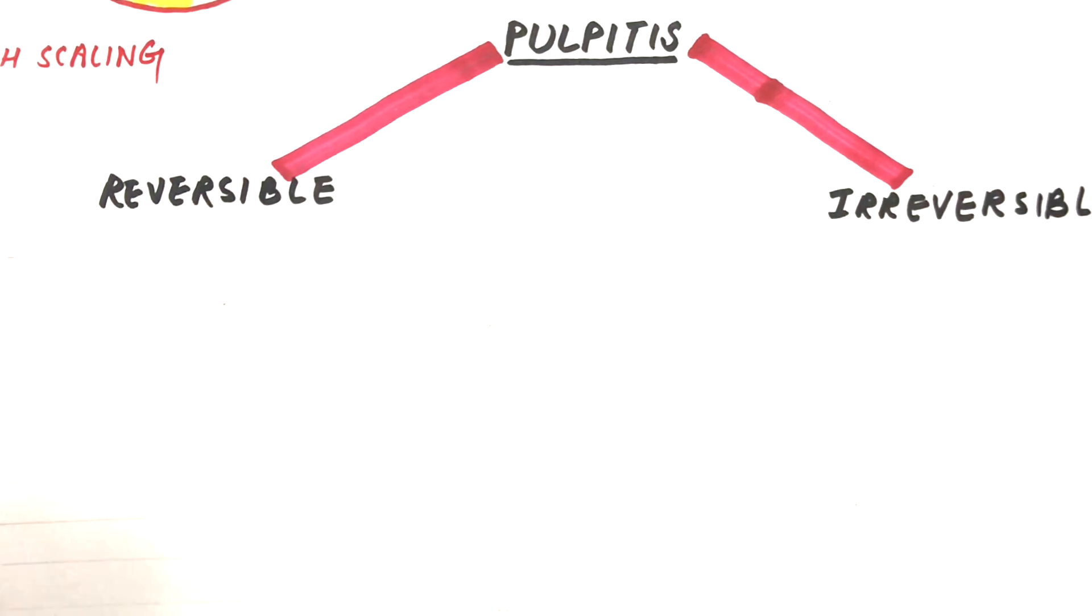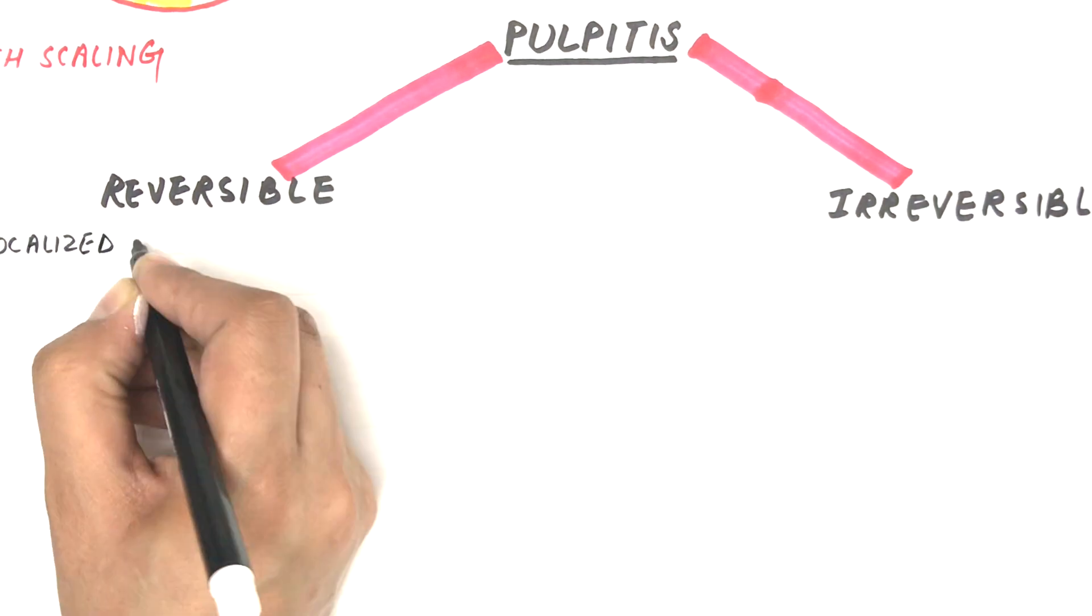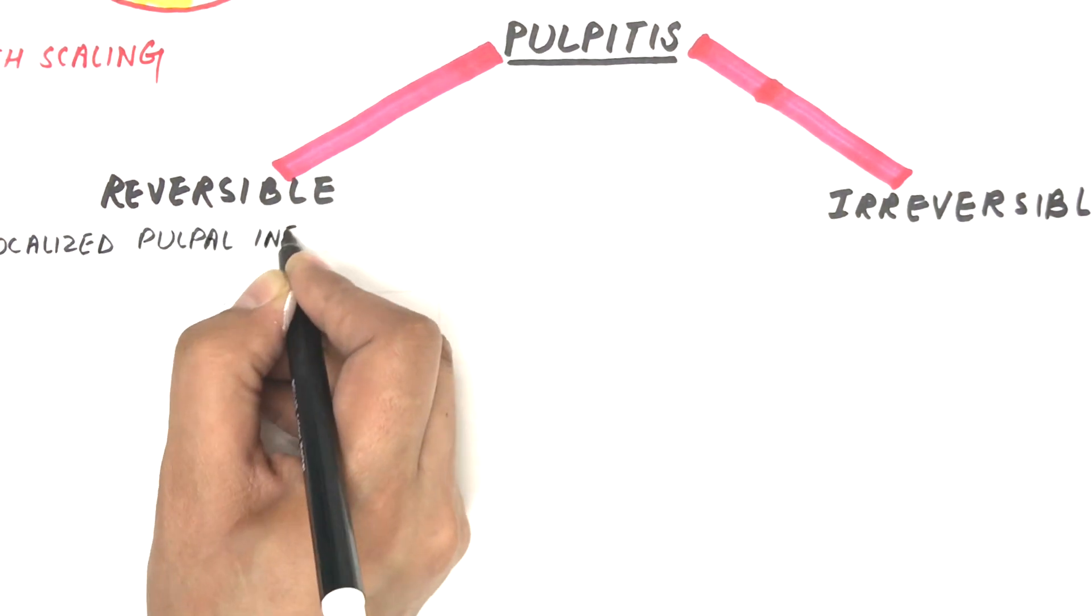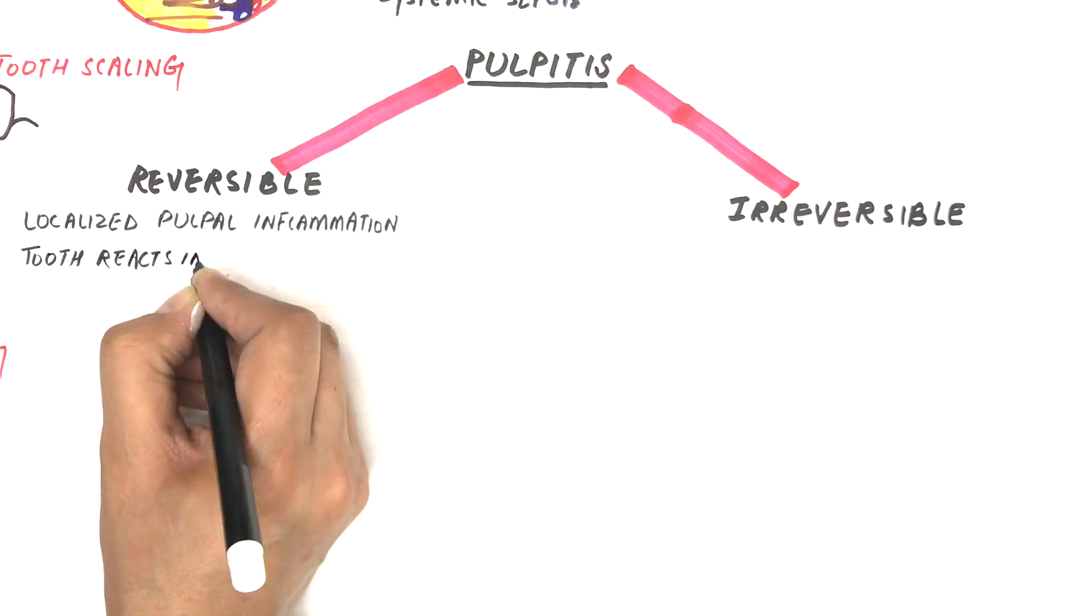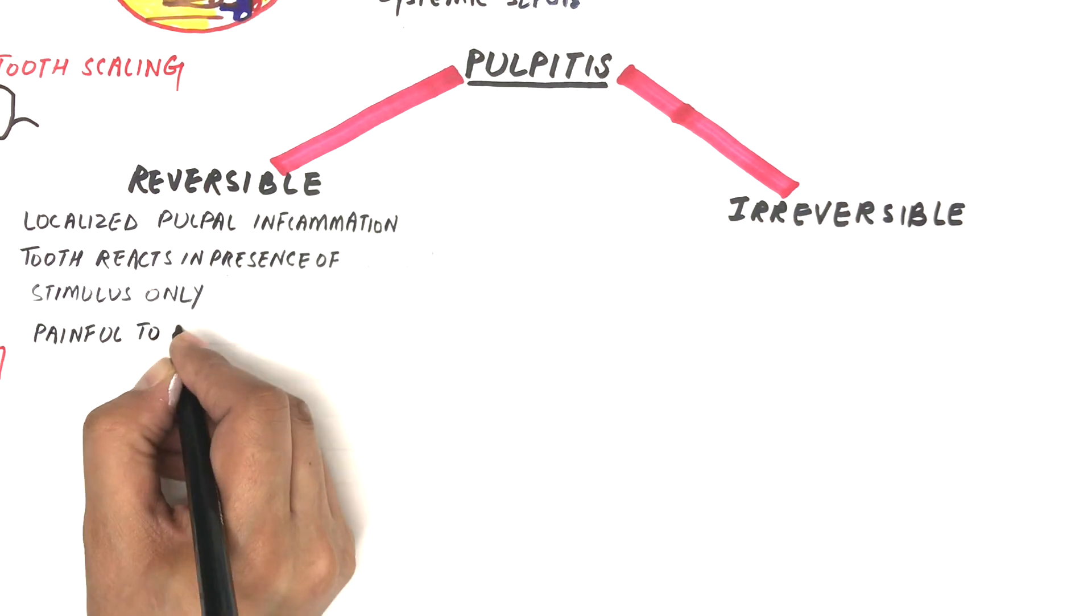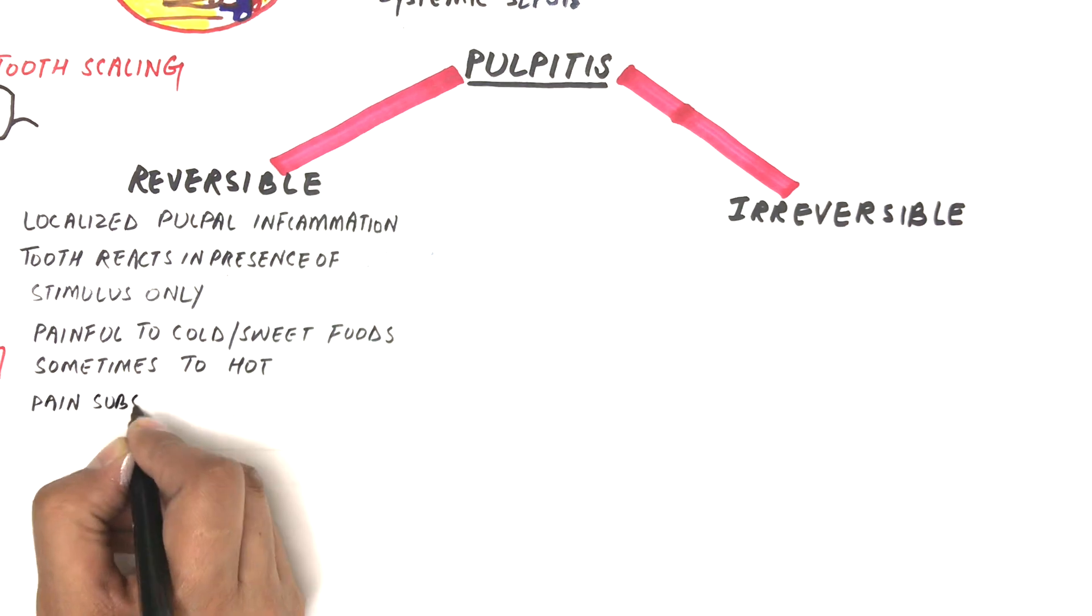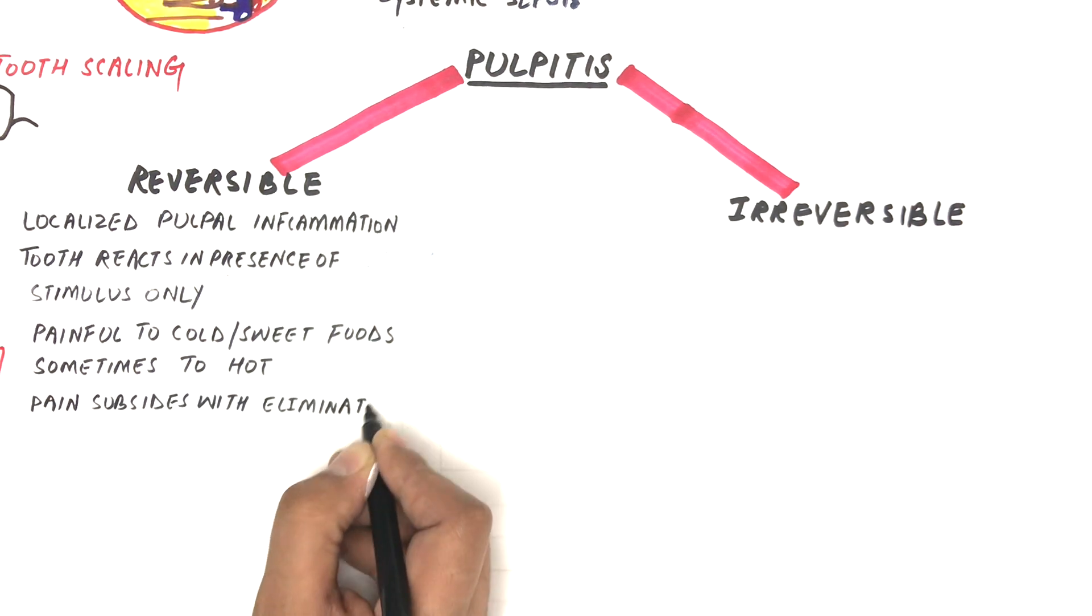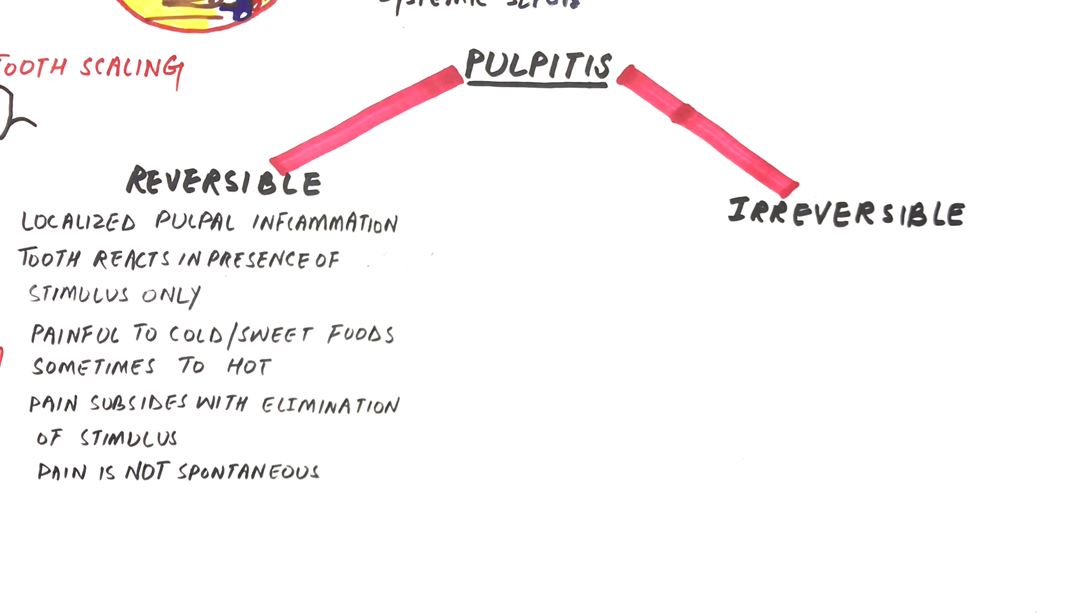Let's discuss each one of them separately. Reversible pulpitis is more like a localized pulpal inflammation such that the inflammation is only at a specific site and not throughout the pulpal tissue. The tooth reacts in the presence of any stimulus only. Involved tooth is painful to cold and sweet foods and sometimes to hot foods. Pain subsides with the elimination of the stimulus and pain does not occur spontaneously and does not continue after removal of the stimulus.